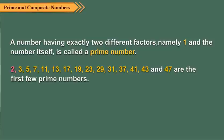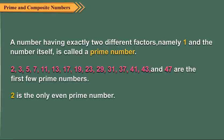2, 3, 5, 7, 11, 13, 17, 19, 23, 29, 31, 37, 41, 43 and 47 are the first few prime numbers. All prime numbers are odd except 2, or we can say that 2 is the only even prime number.